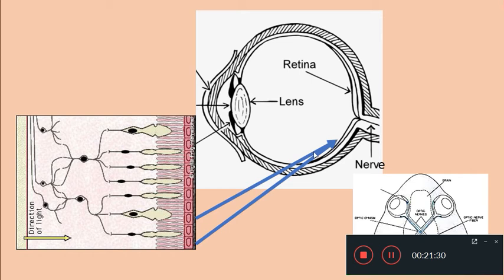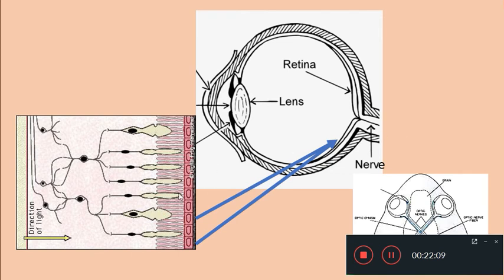This is the retina — an enlarged view where you can see the two types of cells: the rod cells as well as the cone cells. These are the cone cells and these are the rod cells; they are connected to bipolar cells and ganglion cells. Light comes in this direction, and in this retina you have cells like rods and cones, bipolar cells, and ganglion cells.